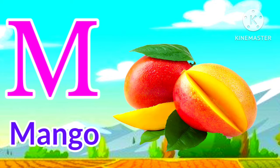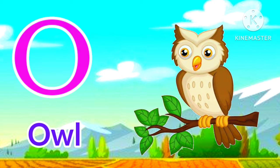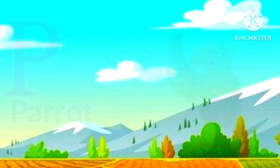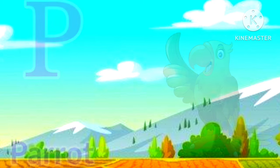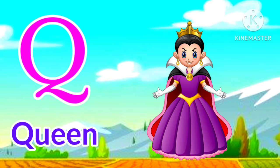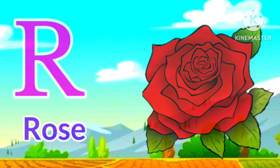N for nine, nine means no. O for owl, owl means ullu. P for parrot, parrot means. Q for queen, queen means rani.